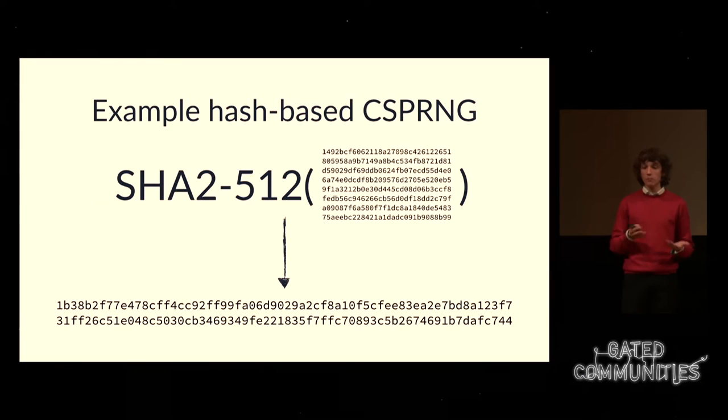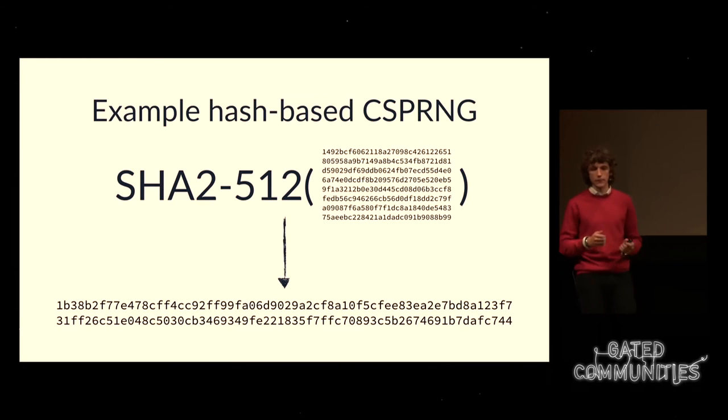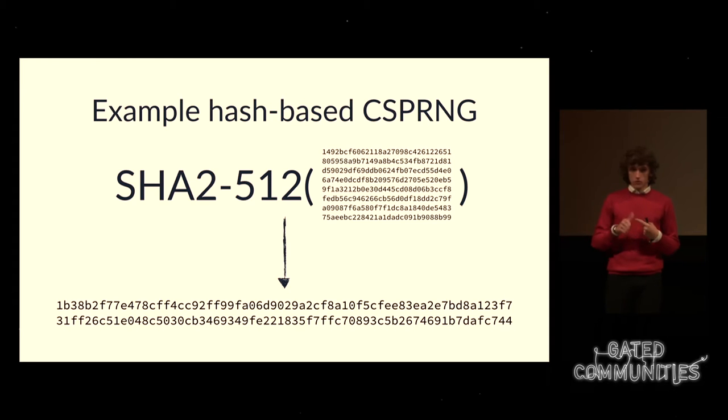To understand how a CSPRNG works, I'll present a simple one based on hash functions. The properties of hash functions we care about today are: the output is uniform — all bits are indistinguishable from random if you don't know the input; it's impossible to reverse — given the output, you know nothing more about the input; and it takes a limited amount of input and produces a fixed amount of output. These are the properties we'll use to build a CSPRNG.